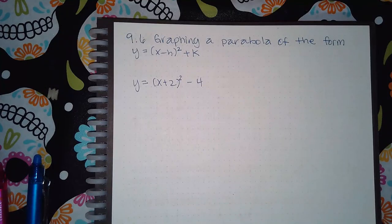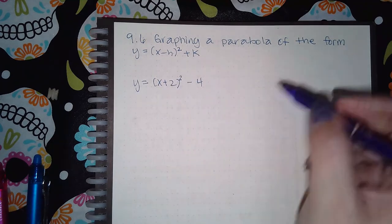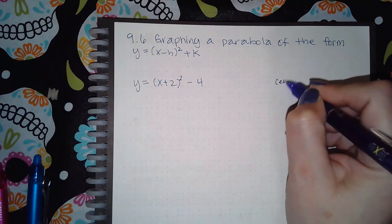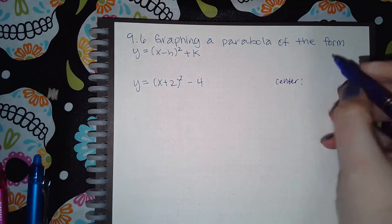Here we have graphing a parabola of the form y equals (x-h)² plus k. Just like the absolute value, you take whatever's inside the square to figure out the center of the problem.